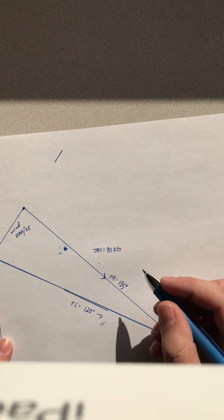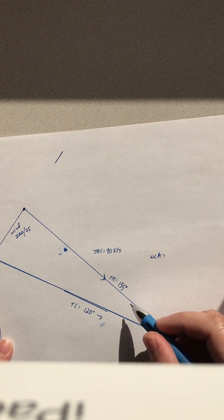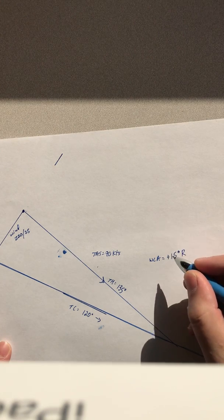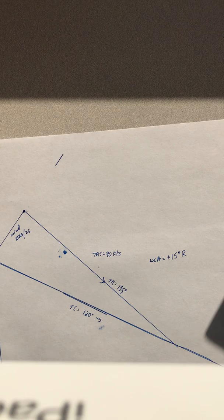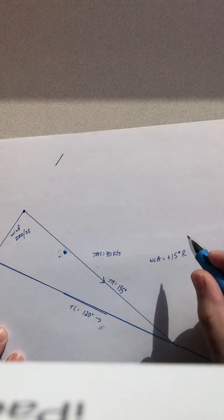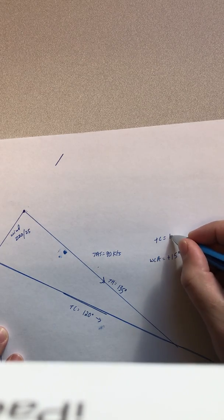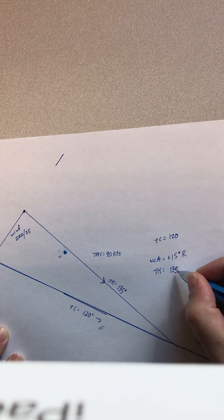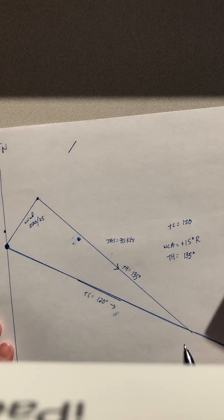Now that we have our true course and our true heading, the difference between them is our wind correction angle. In this case the wind correction angle is 15° right — we need to correct 15° to the right to end up at our destination. So: true course 120°, wind correction angle 15° right, true heading 135°.